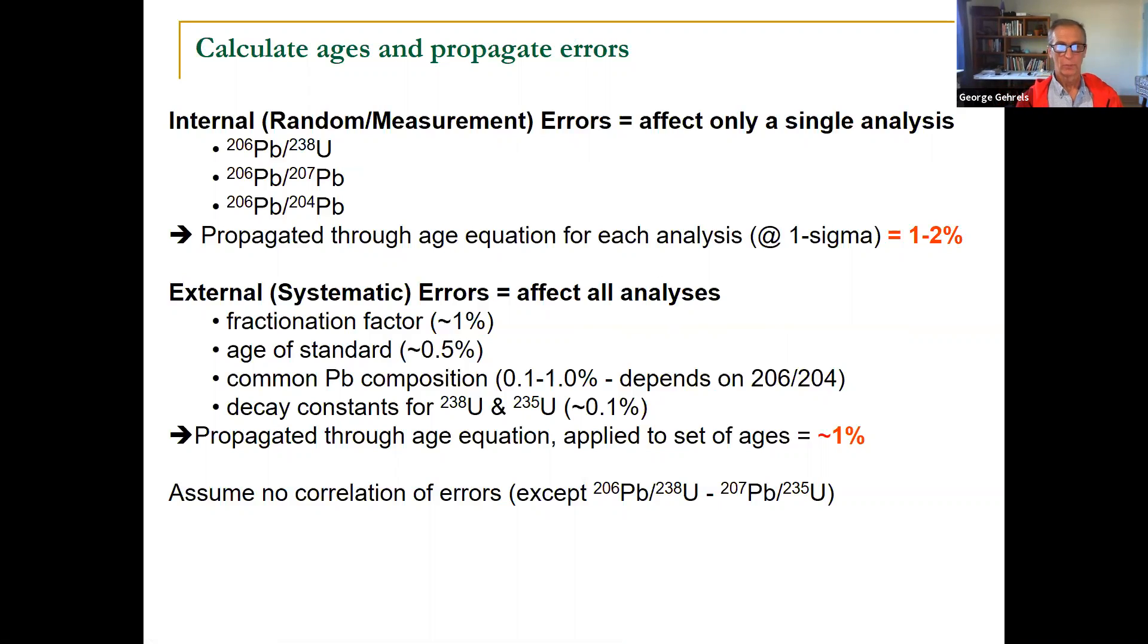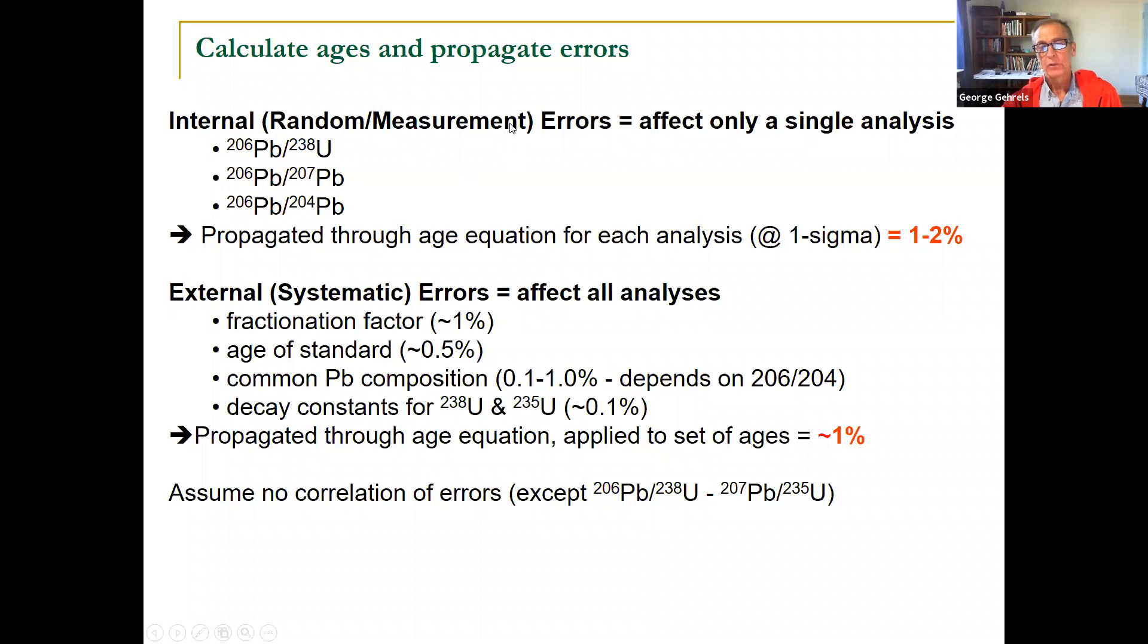When you analyze the data, we take the uncertainties of these measurements and we divide them up into two different types. This is really important that you understand how this works because this is going to go into your report. When you report the ages, it's going to go into your data table. And so there are some measurements that just depend on a single analysis. They would be the ratios that you measure six, eight, six, seven, six, four. We don't measure 235, right? Because you don't need to. And those are propagated through the age equation. And those might end up giving you 1% or 2% uncertainty at one sigma.